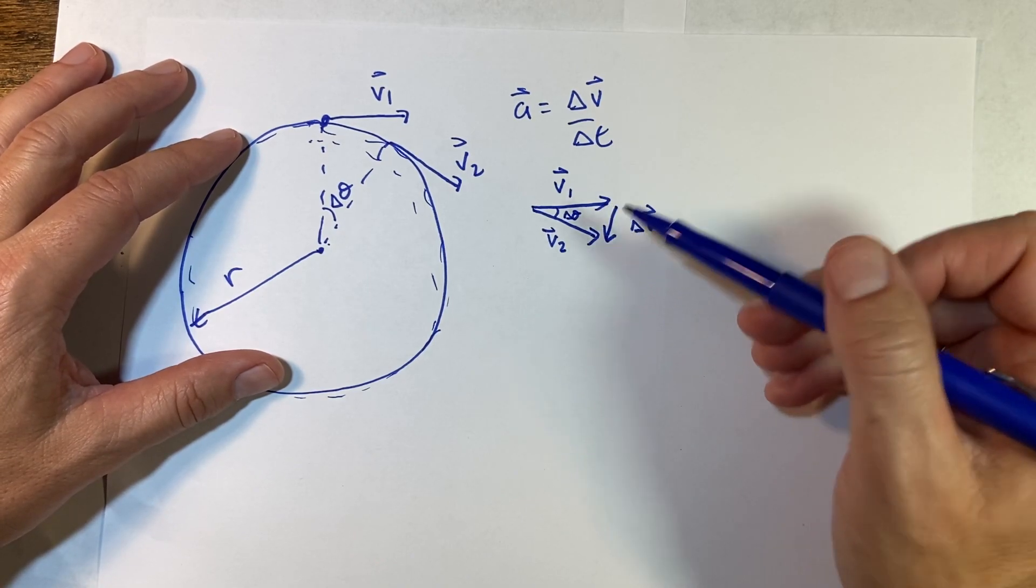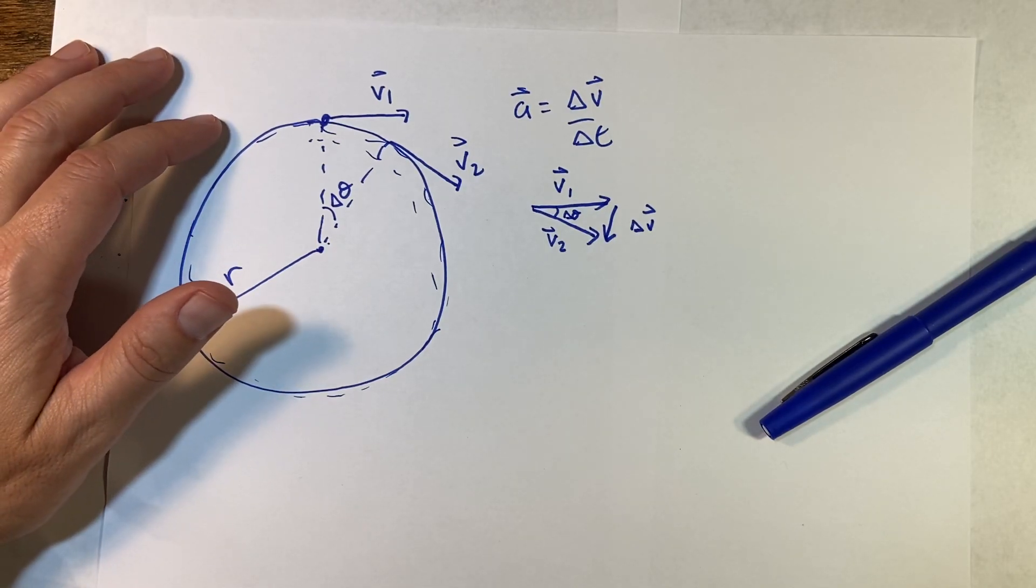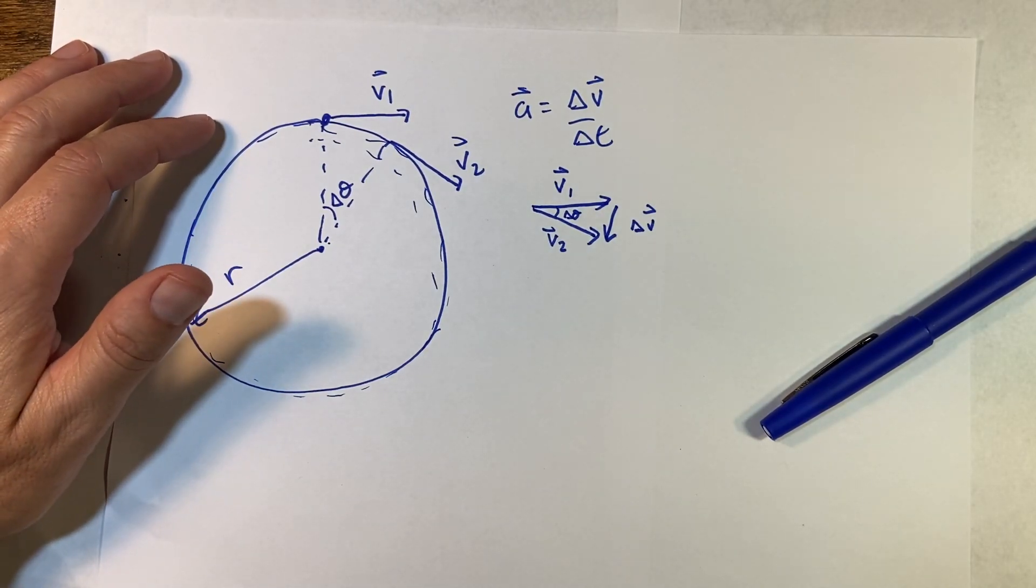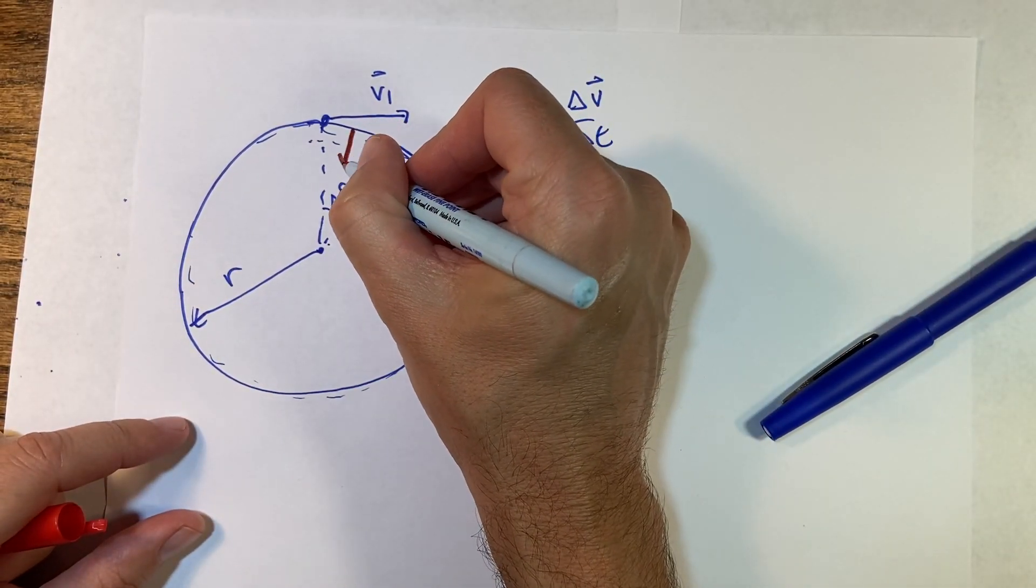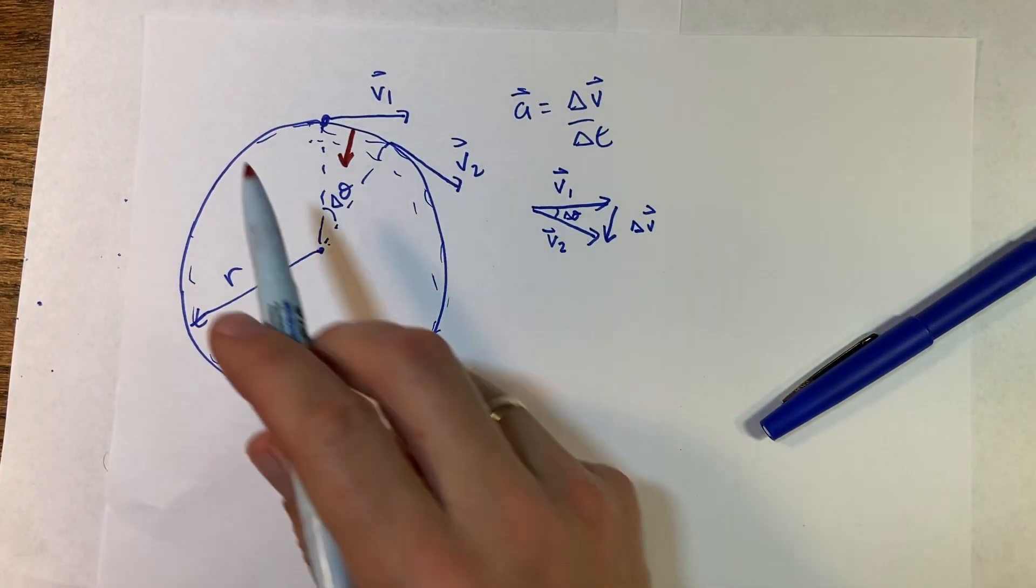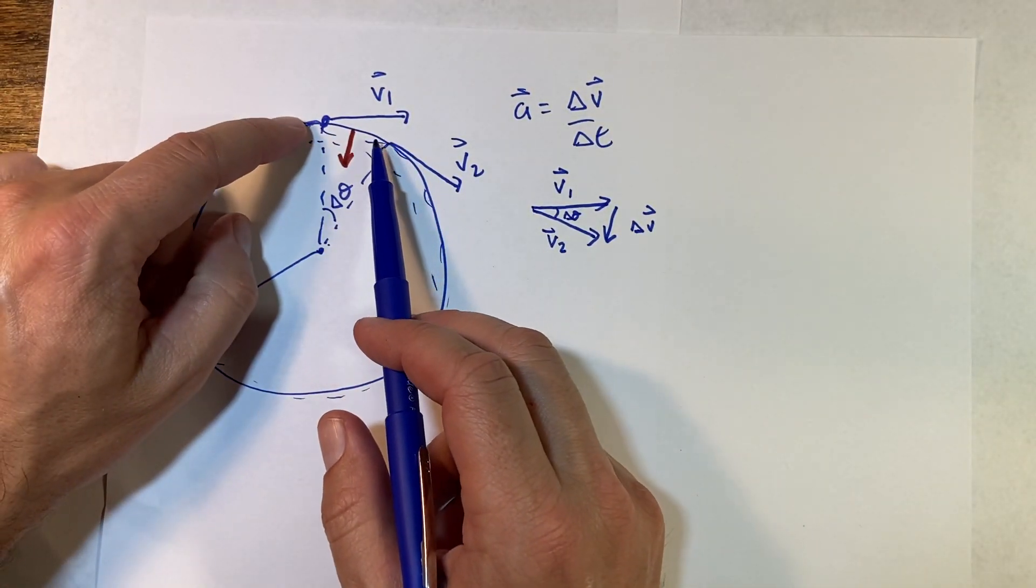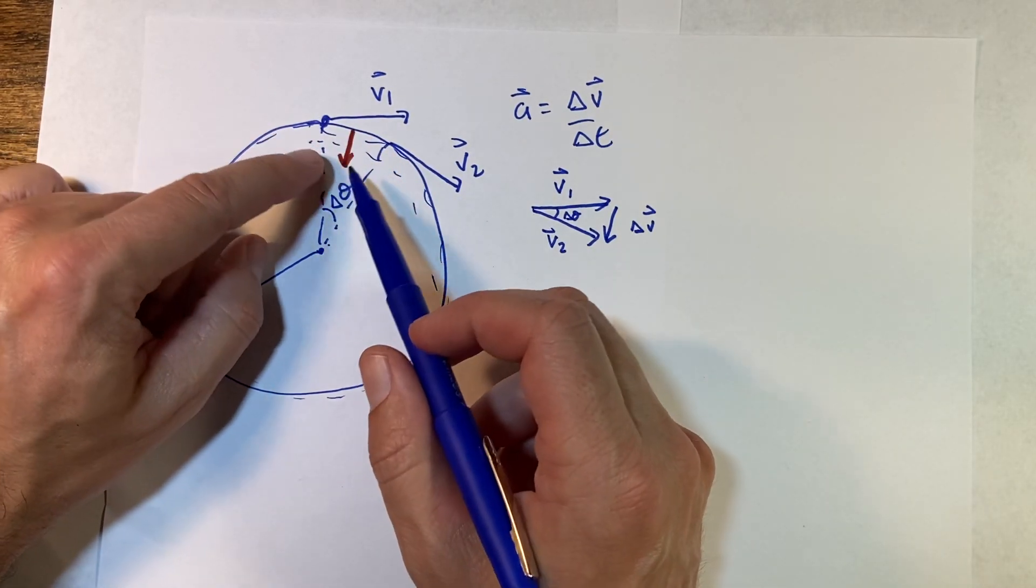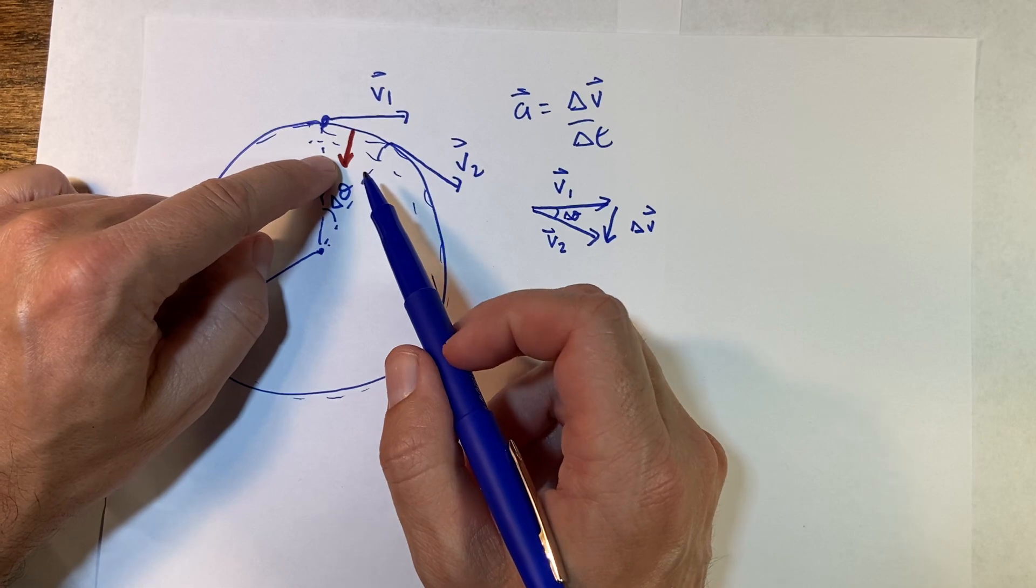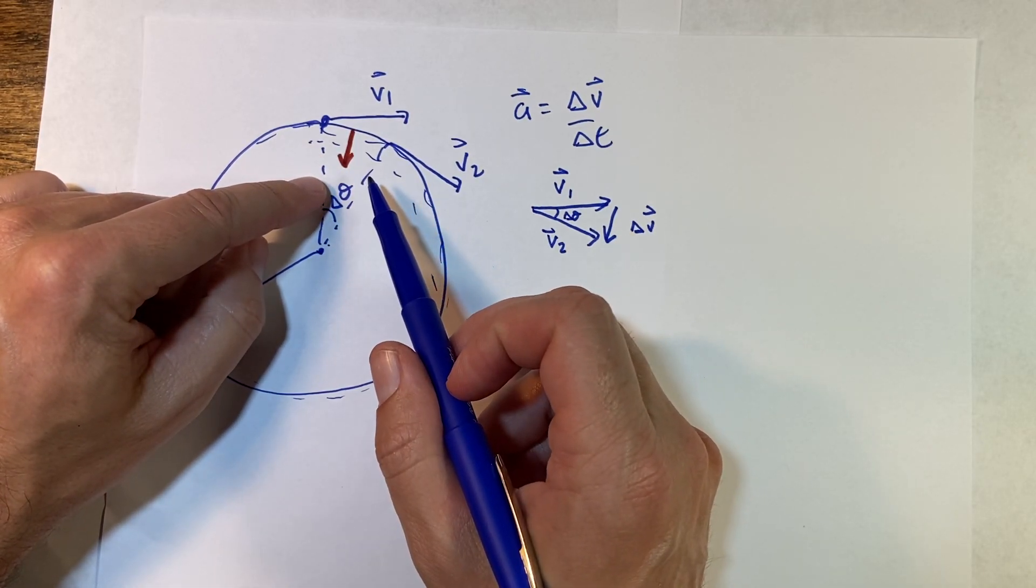So that's the direction that the velocity changed. And so if I draw that up here, that's the direction of the acceleration during that interval. So we're dealing with a finite time interval, but you can imagine as this time interval gets really really small, then you could actually say that's pointing towards the center of the circle. The acceleration points towards the center of the circle—centripetal. That's where that comes from.